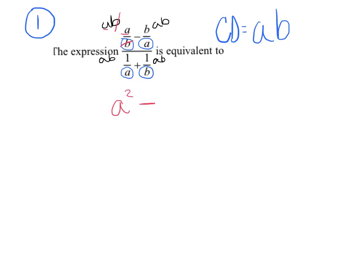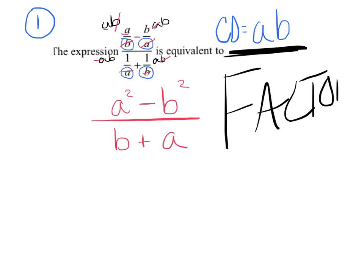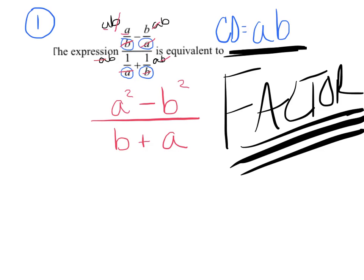You have a B on top and a B on the bottom, so those cancel, and I'm left with A times A, which is A squared. And there's a minus sign. You have an A on the bottom and an A on top, so those cancel, and I'm left with B times B, which is B squared. On the bottom, the fraction was killed. After we take care of the common denominator, we have to make sure we factor — there is no canceling unless you have factored.